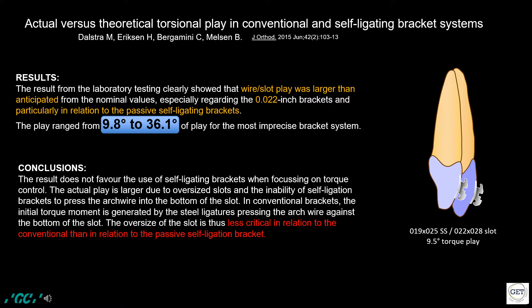Amazing findings were presented in research from 2015: the play in a 0.22 slot bracket tested with a 0.19 by 0.25 SS wire was varying up to 36 degrees in poor-quality brackets. Passive brackets were found to be less effective in controlling torque due to the oversized slot and the lack of active force to seat the wire inside the slot.